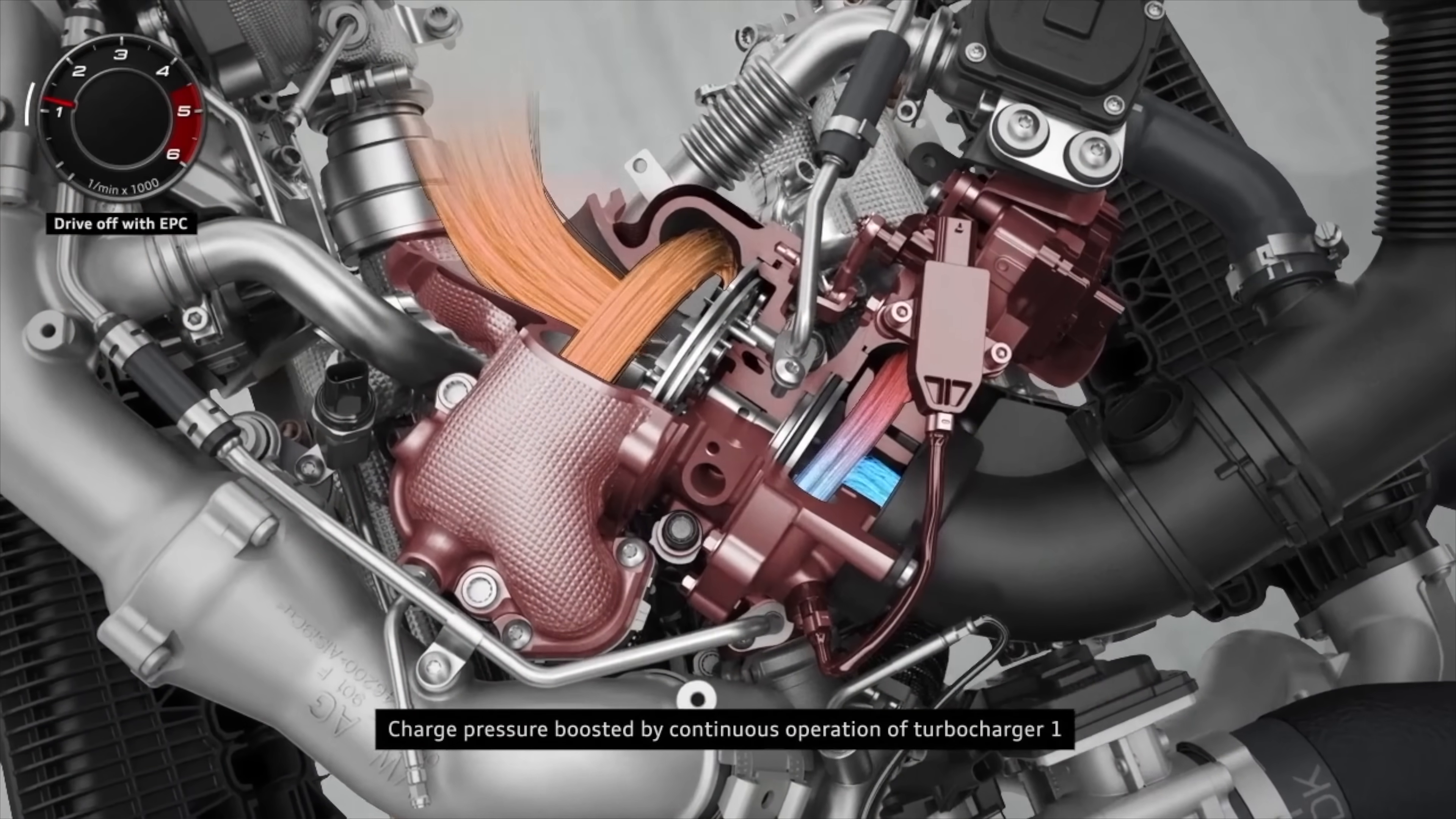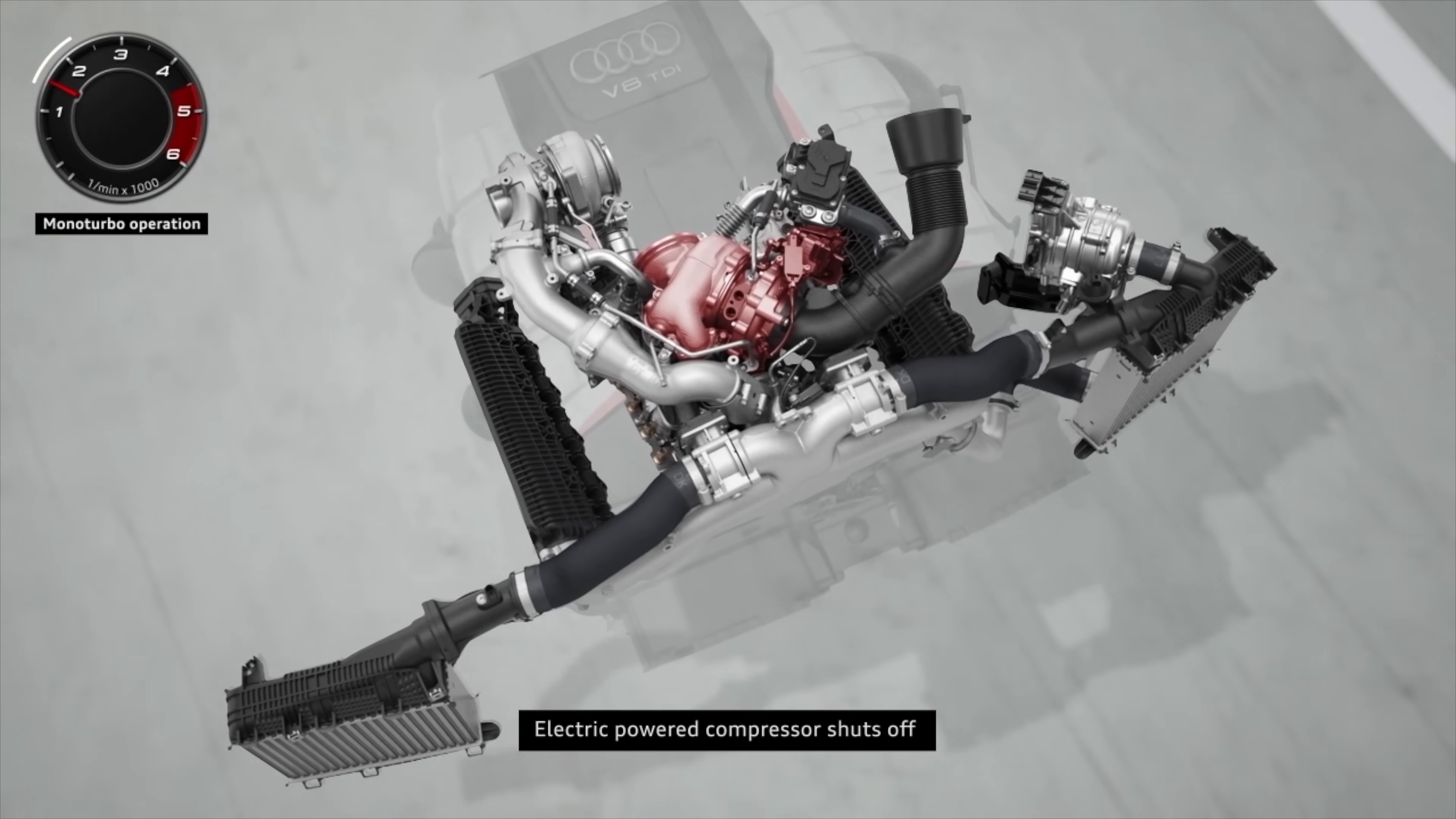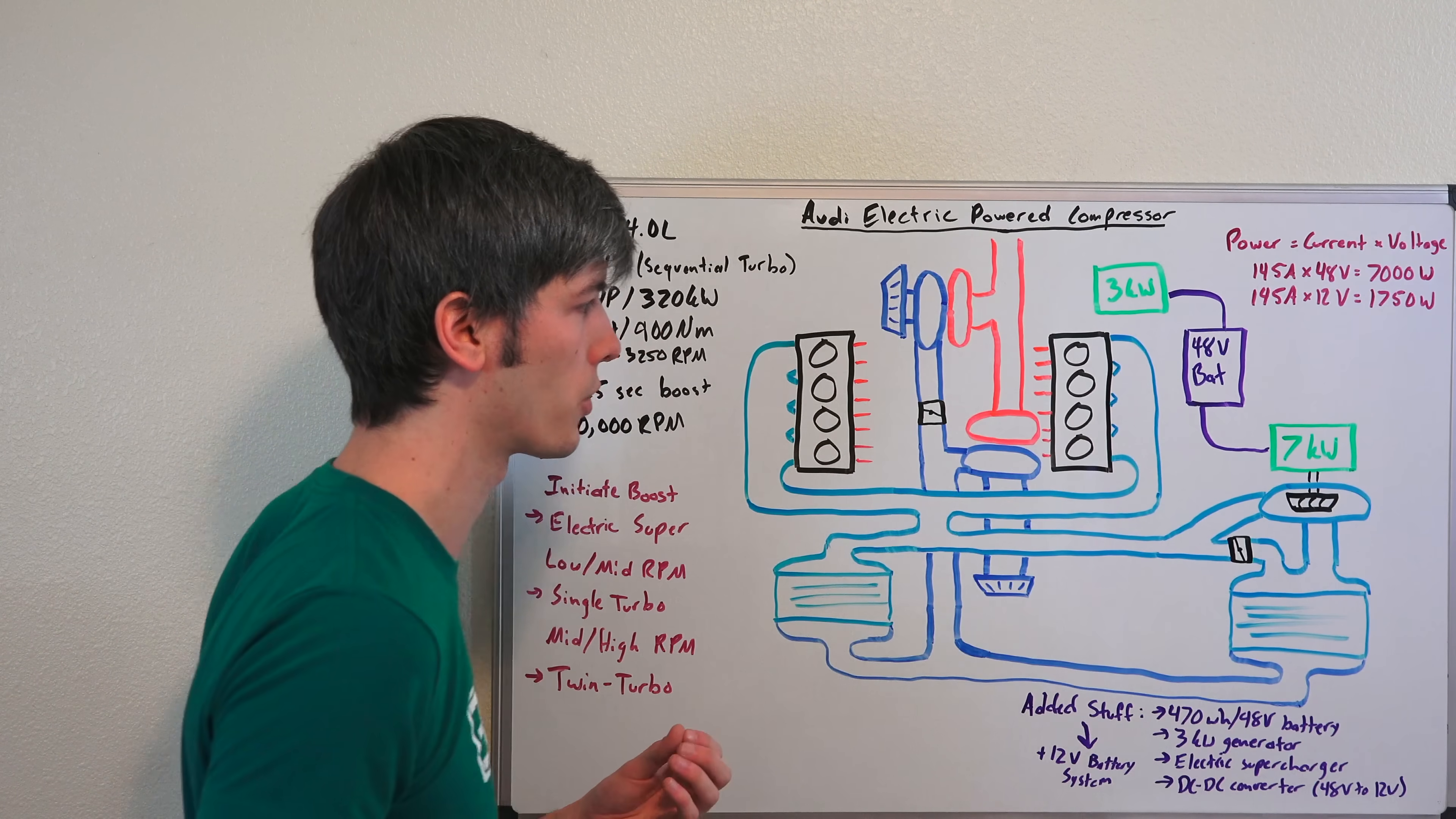As you start to get into those low to mid higher RPMs, the low to mid RPM range, then you start to just rely on the turbocharger itself, once those exhaust gases have been built up, and you no longer need this electric supercharger to compensate for the lag. So then you're just running on this single turbocharger.